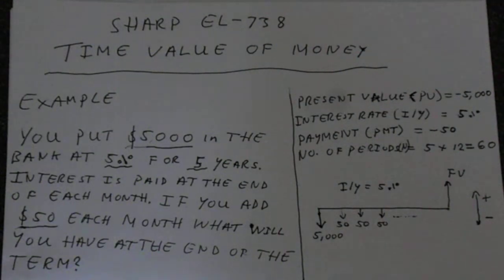So the example we've got here is you put $5,000 in the bank at 5% for 5 years. Interest is paid at the end of each month. If you add $50 each month, what will you have at the end of the term?